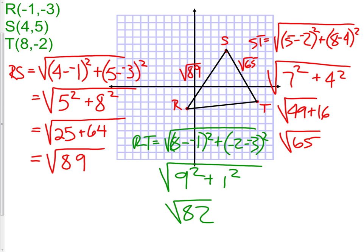We now know that RT is the square root of 82. We can now classify the triangle by the sides. The three sides have three different measurements. That means we have a scalene triangle.